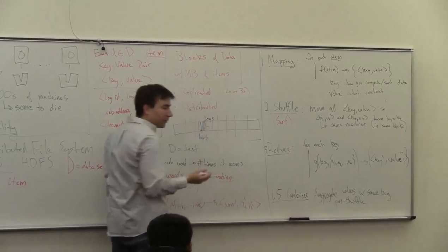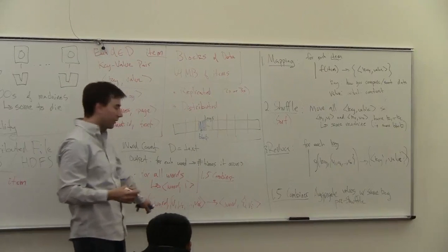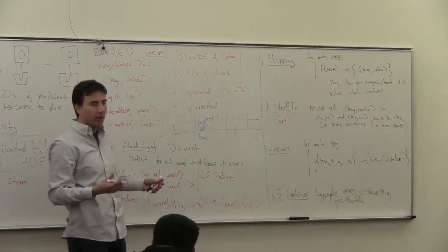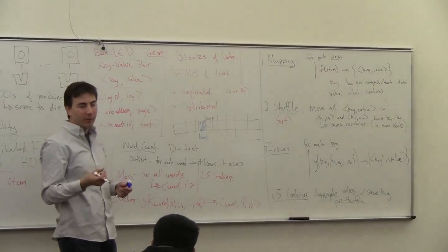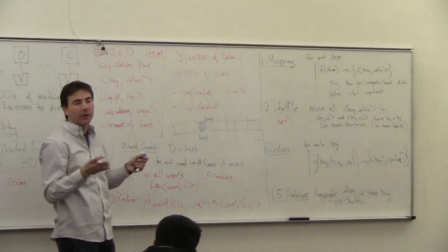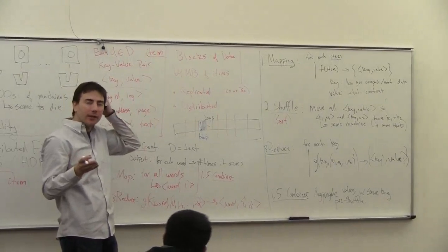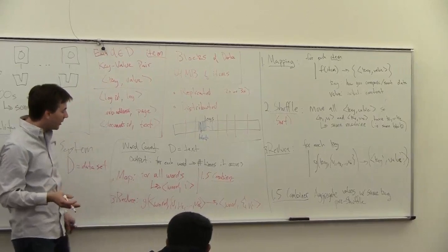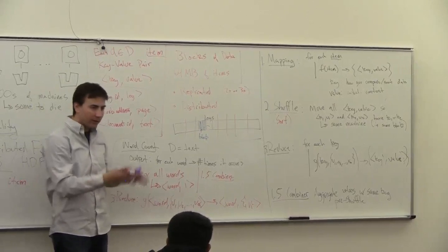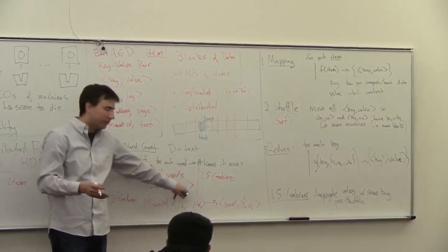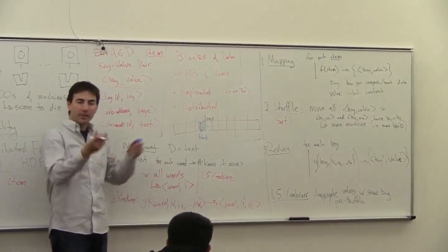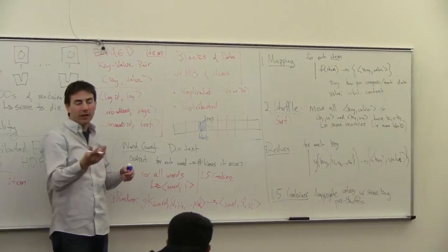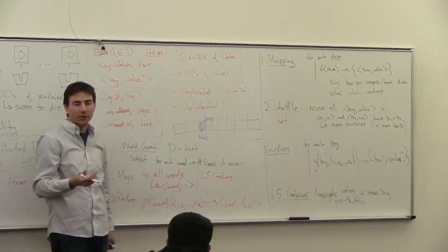And so what this is doing is the same thing that you're doing in this reduce step. If you have multiple key value pairs with the same word, if the word pi occurs 10 times in this block of pages that you have, then instead of sending out 10 of these key value pairs with each of them as a value 1, you add up the counts and you send out one key value pair with the value 10.